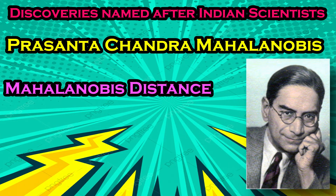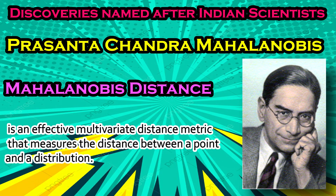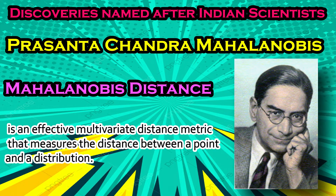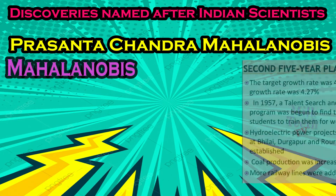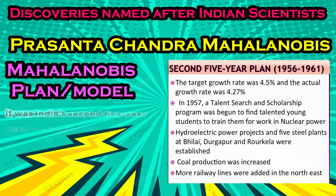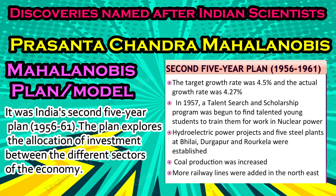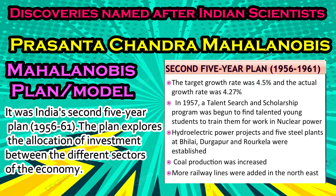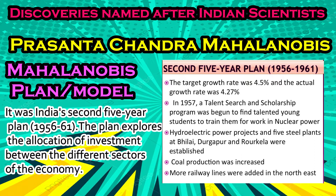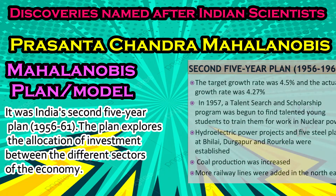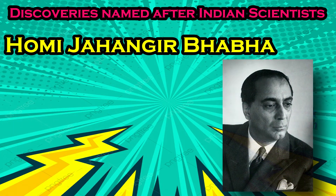Prasantha Chandra Mahalanobis is best remembered for the Mahalanobis distance, an effective multivariate distance metric that measures the distance between a point and a distribution. He is also remembered for being one of the members of the first Planning Commission of India. He also has the Mahalanobis plan, or Mahalanobis model, named after him — India's second five-year plan devised in 1956–61, which explored the allocation of investment between different sectors of the economy.